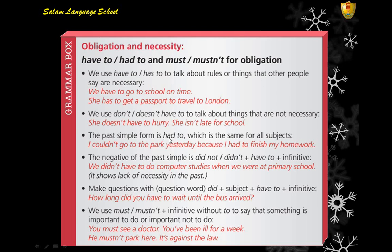The past simple form is 'had to', which is the same for all subjects. For example: 'I couldn't go to the park yesterday because I had to finish my homework.' The negative past form is 'didn't have to' plus the infinitive — for example: 'We didn't have to do computer studies when we were at primary school.' This shows lack of necessity in the past.